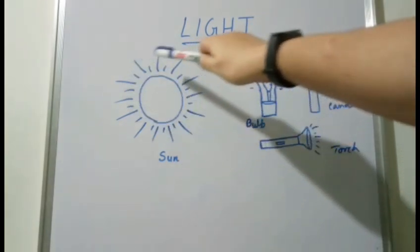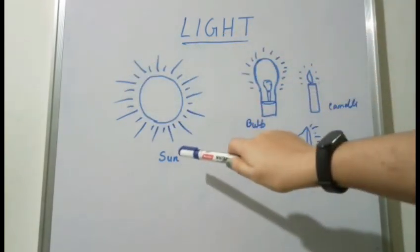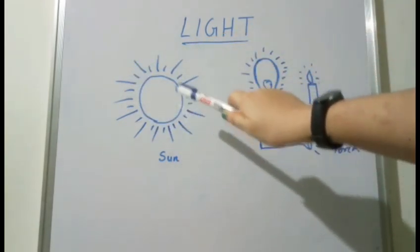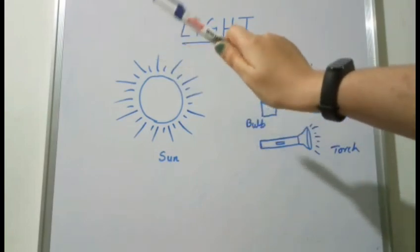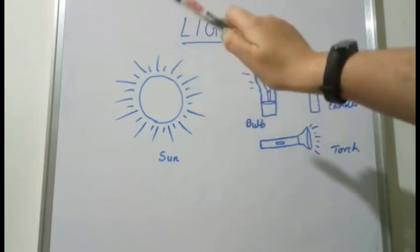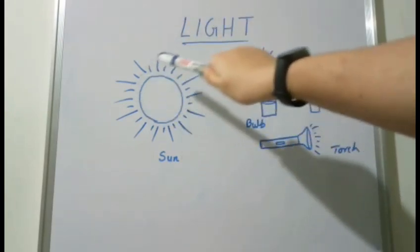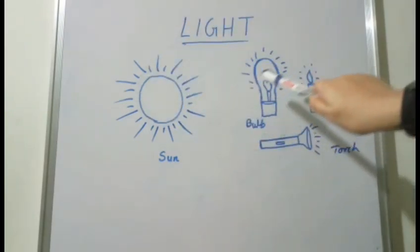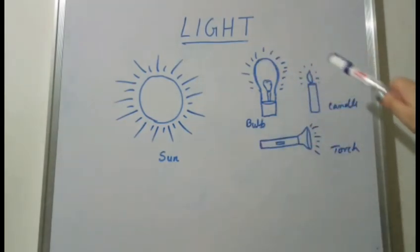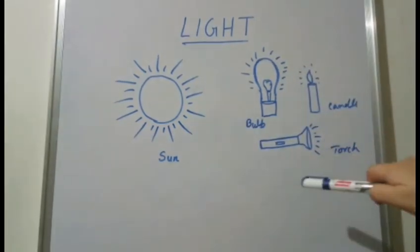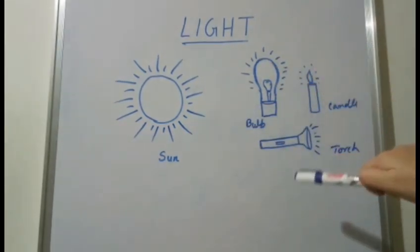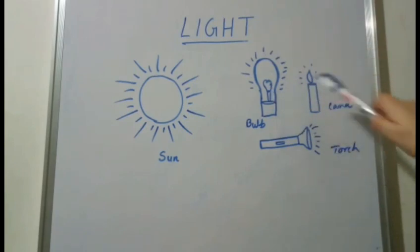The sun is the ultimate and only natural source of light energy. Other sources of light energy which are daily used in our life include bulb, torch, candle, etc.